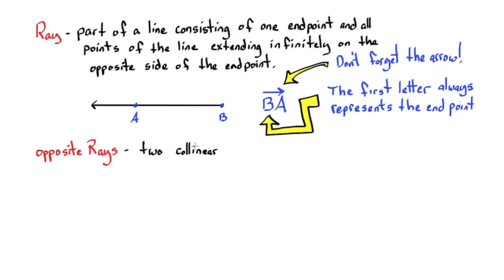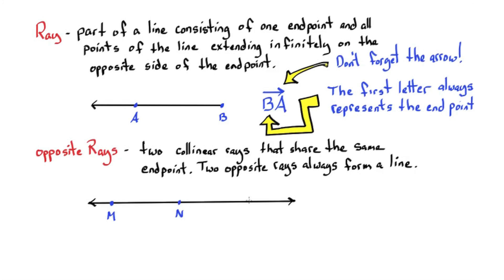Opposite rays. Two collinear rays that share the same endpoint. Two opposite rays always form a line. So here we have ray NM and ray NO are opposite rays and form a line.